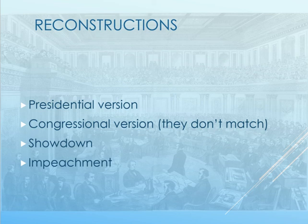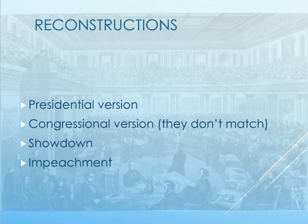The Senate voted 35 to 19 to convict. That seems like a big victory for Johnson, but it's really not, because it was one vote short of what was needed to actually remove him. Seven Republicans had voted to acquit. Effectively, this got Johnson out of the way politically, even though it didn't remove him from office. He then lost the Democratic nomination to Horatio Seymour, who lost the general election in 1868 to General Ulysses S. Grant. Johnson tried three times to run for the U.S. Senate in Tennessee and won on the third attempt, returning to the Senate to applause and roses on his desk. He then suffered a series of strokes and died — an unfortunate end for Johnson, and an unfortunate end for Reconstruction as well.